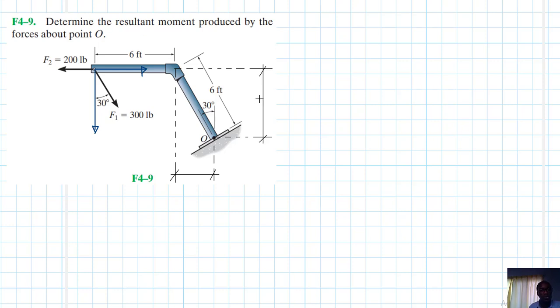So what is this one? This one is going to be equal to 6 cos 30. And then this one is 6 sin 30. And then this component is 300 cos 30, and this one is 300 sin 30.